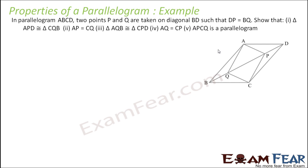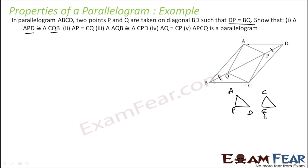In parallelogram ABCD, two points P and Q are taken on diagonal BD such that DP is equal to BQ. Show that triangle ADP and triangle CBQ are congruent. In triangle APD and triangle CQB: PD is equal to QB — given. AD and CB are equal — opposite sides of parallelogram ABCD.